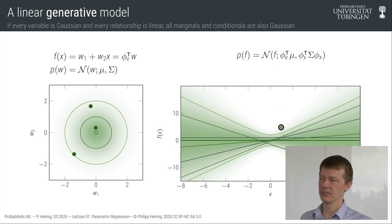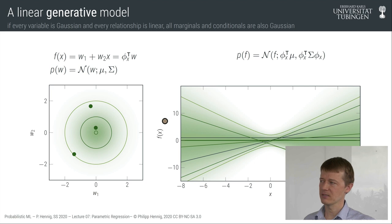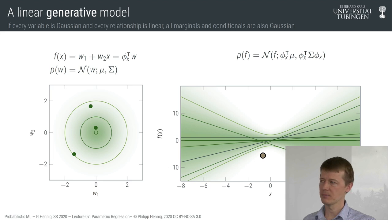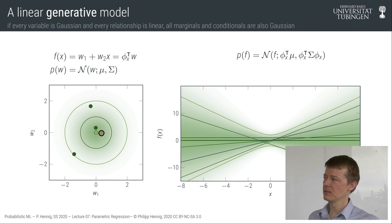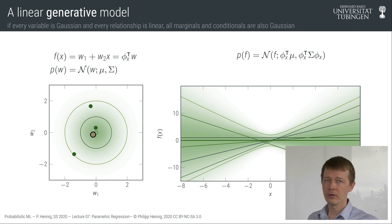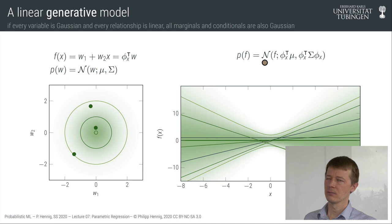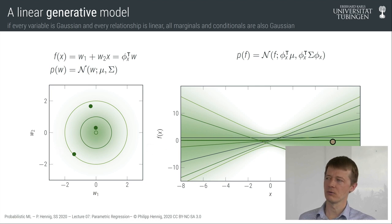I'm showing function values in a plot mapping x to f(x). The mean — the green dot at (0,0) — which I've chosen to be zero, corresponds to a mean for all the function values. At any location x, the mean prediction for f(x) is phi(x) times mu. Since mu is zero here, the mean of the function values is zero everywhere, shown as a solid green line.